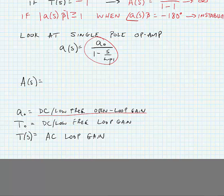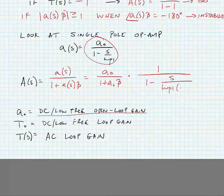If we plug our op-amp gain into our feedback system, A of s divided by 1 plus a of s times beta, then we see that this is equal to a sub 0 divided by 1 plus a sub 0 times beta times 1 over 1 minus s divided by omega p1 times 1 plus a0 times beta.